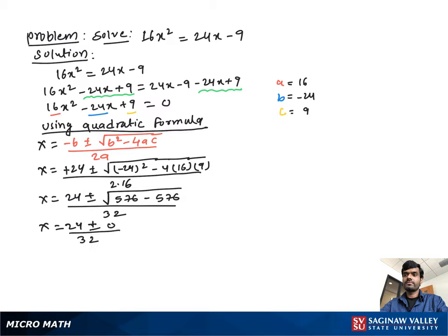Then x equal to 24 over 32. If we divide 24 over 32 both by 8, we get x equal to 3 over 4. So our final answer is x equal to 3 over 4.